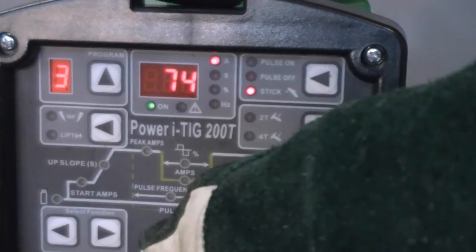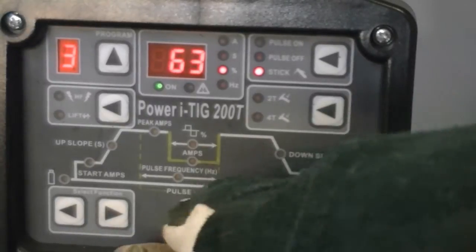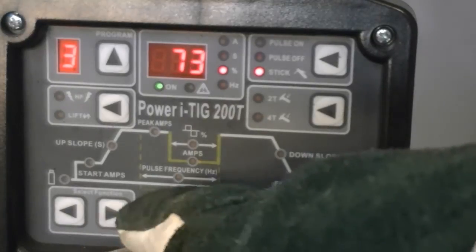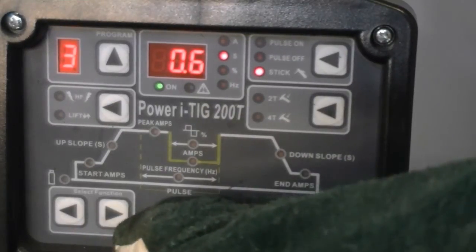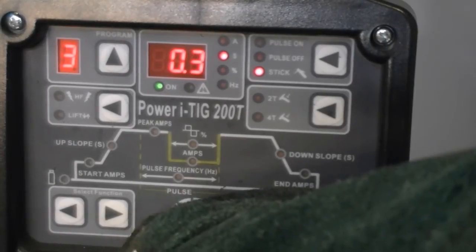I'm going to raise the amperage to 75 amps. I'm going to increase the arc force control to 75%. And I'm going to increase the time to 0.3 seconds.